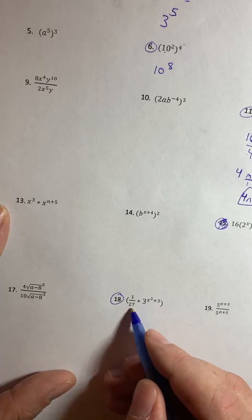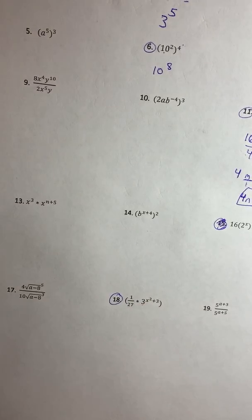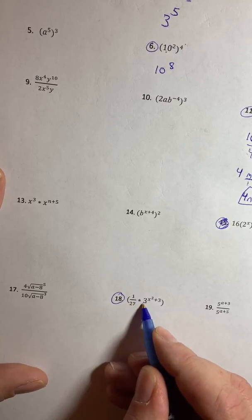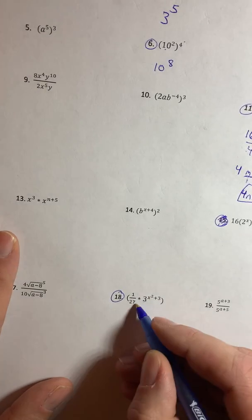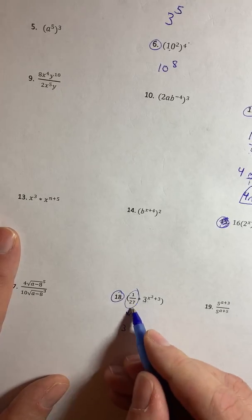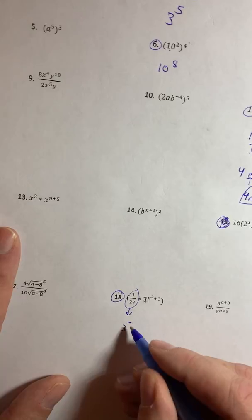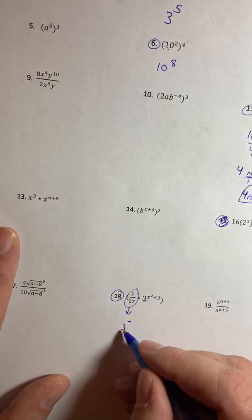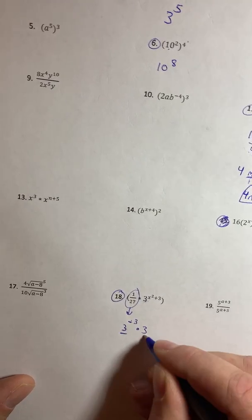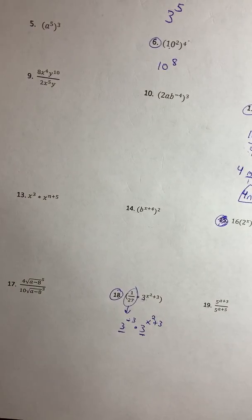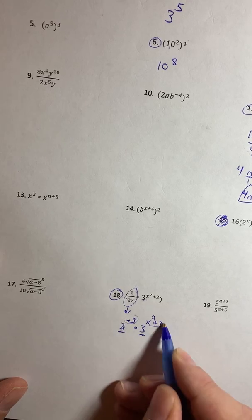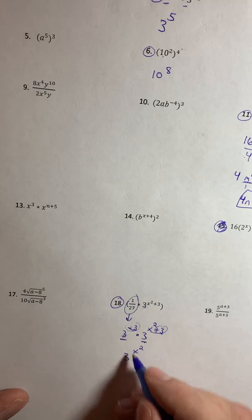One more: we have 1/27 times 3 to the x squared plus 3. These don't have the same base, so we can't multiply yet. We want to rewrite 1/27 as a power of 3. Since negative powers mean dividing, it'll be 3 to a negative power. We need 3 times 3 times 3 to get 27, so 3 to the negative third power equals 1 over 27. Now that both terms are powers of 3 and we're multiplying, we add the exponents: negative 3 plus x squared plus 3. The 3s cancel to 0, giving 3 to the x squared.